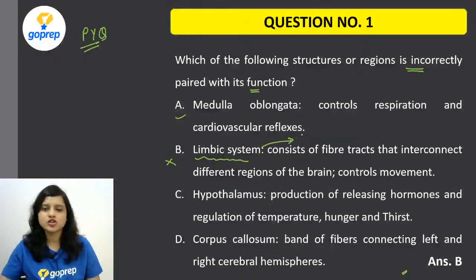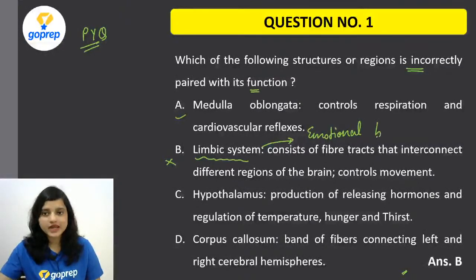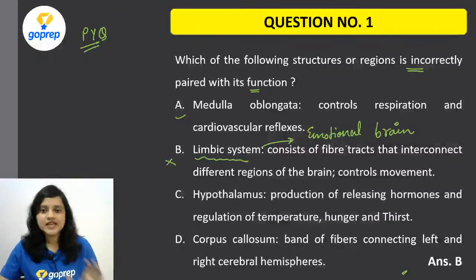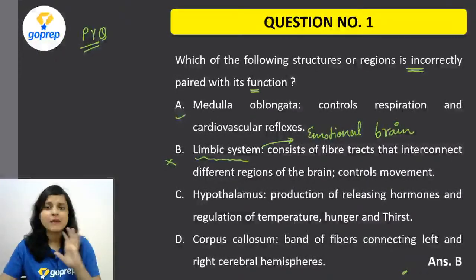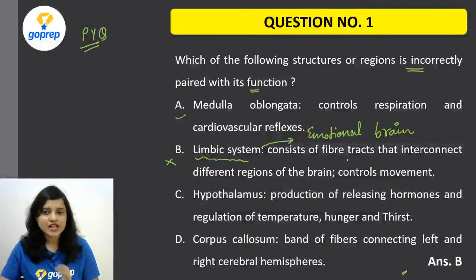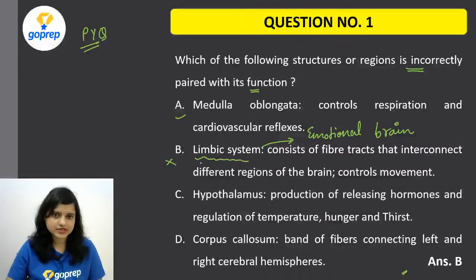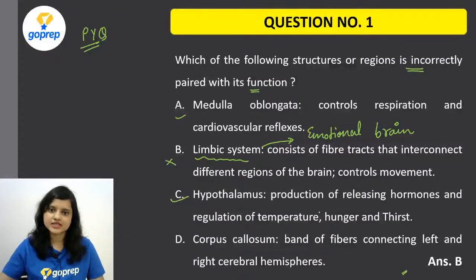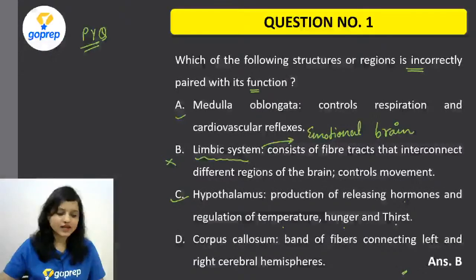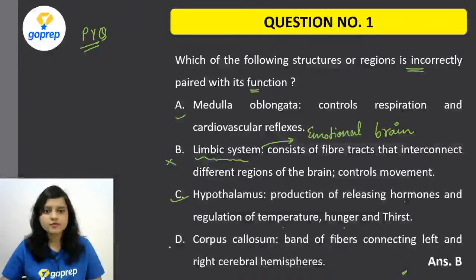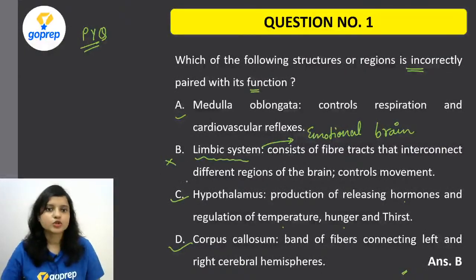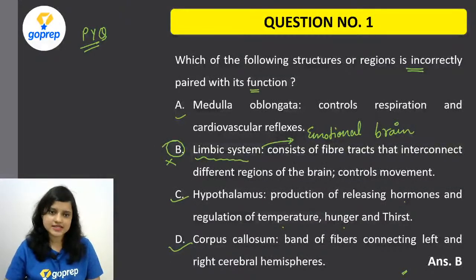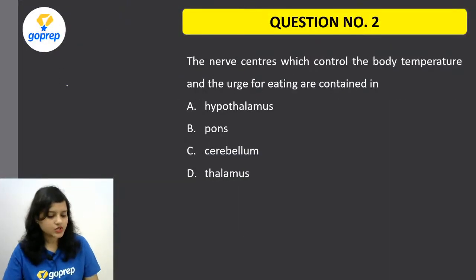Why is B wrong? Because the limbic system is also known as the emotional brain. It contains hypothalamus, hippocampus, and amygdala — these parts of the brain in combined form are called the limbic system. Hypothalamus is responsible for production of hormones, regulation of temperature, hunger and thirst. Corpus callosum is a band of fiber connecting the left and right cerebral hemispheres. So B was wrong and all the other statements were correct.